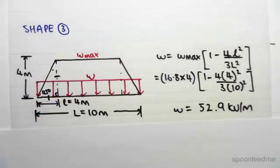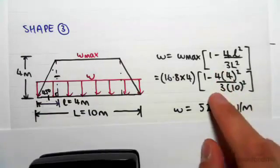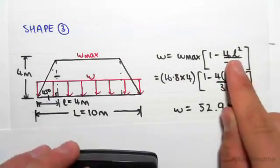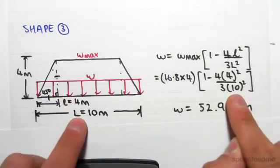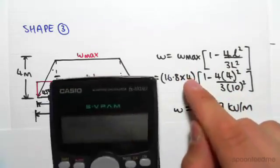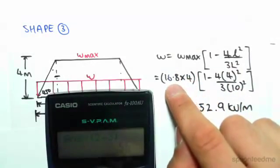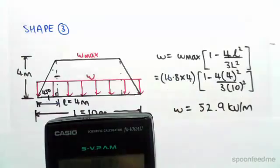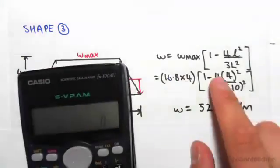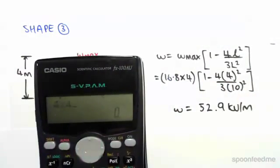Just calculating it now, we're going to be subbing in for little l and big L. Little l is four, big L is ten. The W max is still the same: it's the area load, 16.8, times the height.